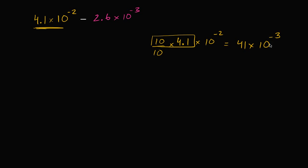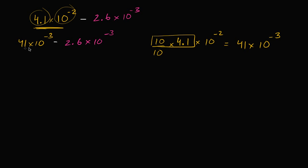And that makes sense — 41 thousandths is the same thing as 4.1 hundredths. All we did was multiply one part by 10 and divide the other part by 10. So we can rewrite the expression as 41 times 10 to the negative 3 minus 2.6 times 10 to the negative 3.